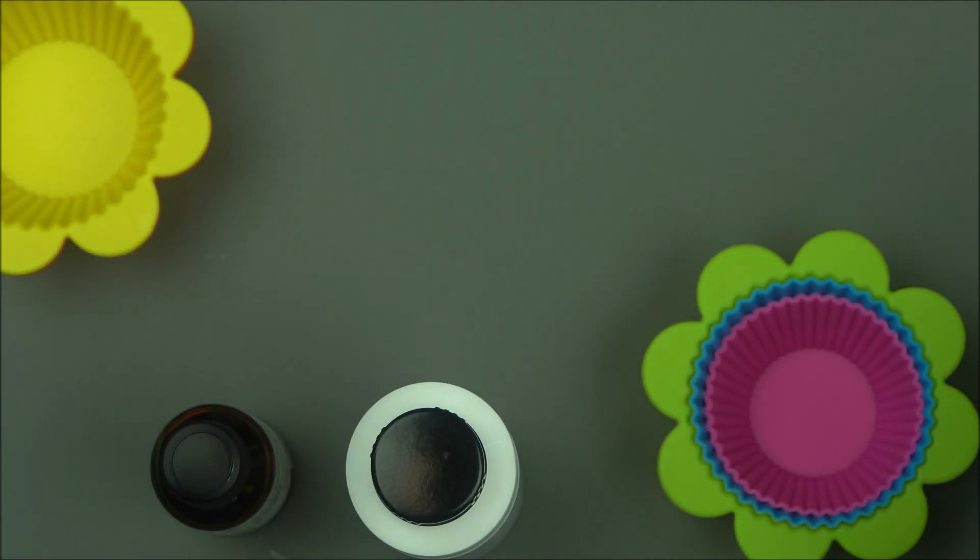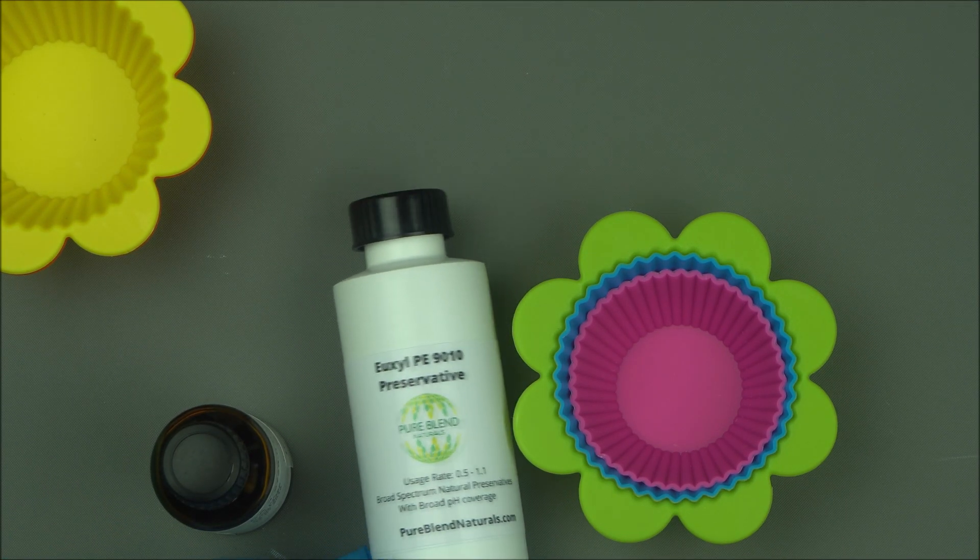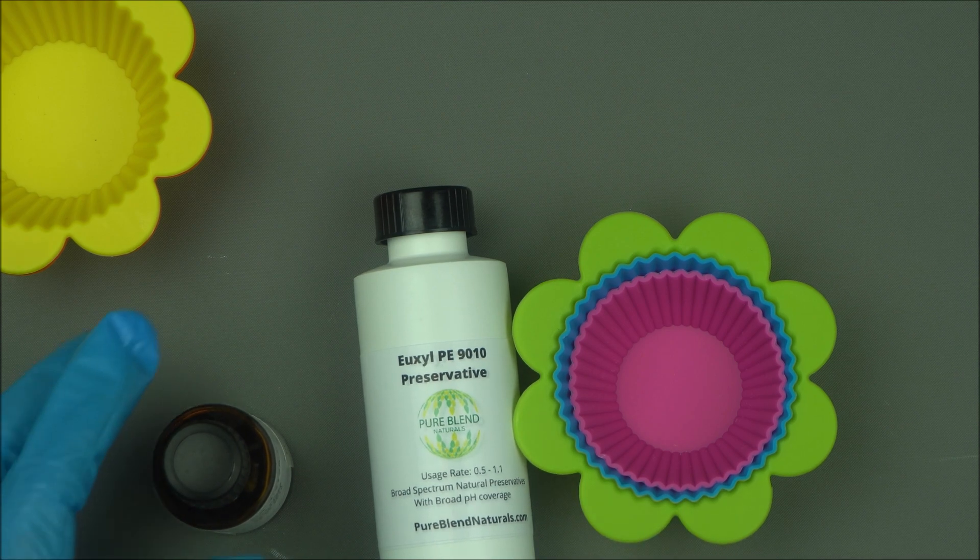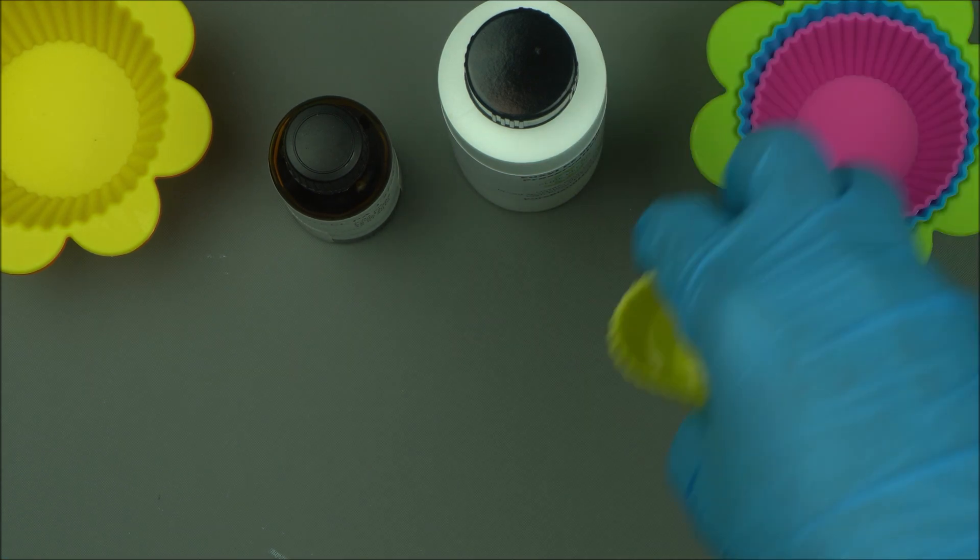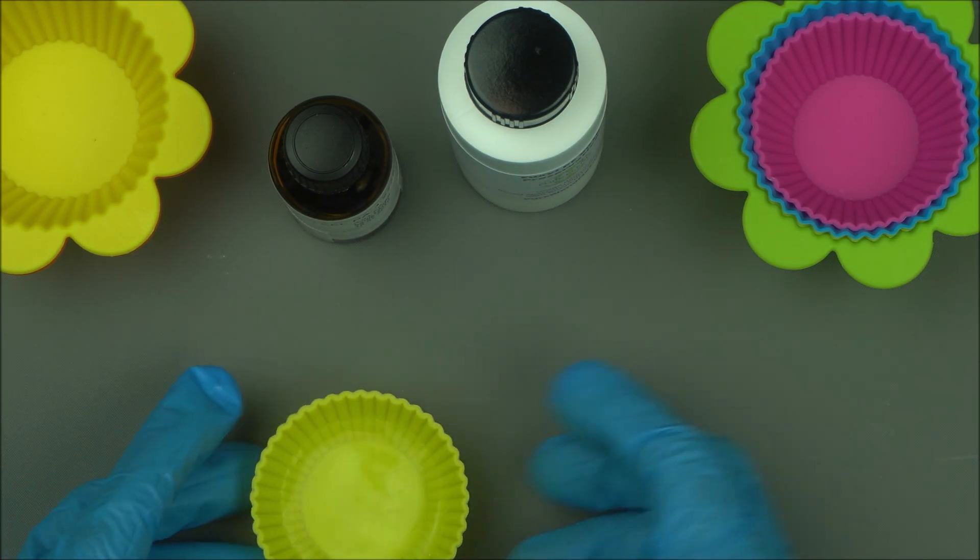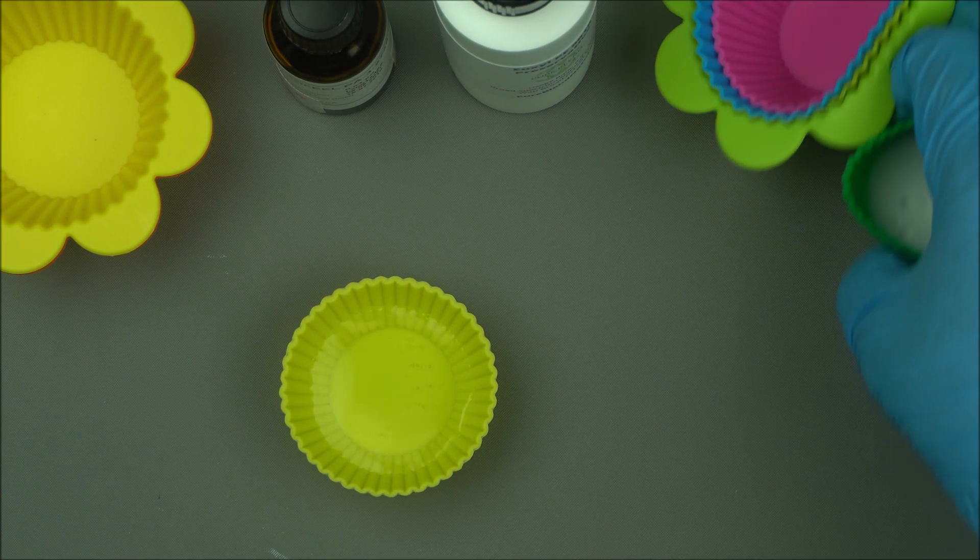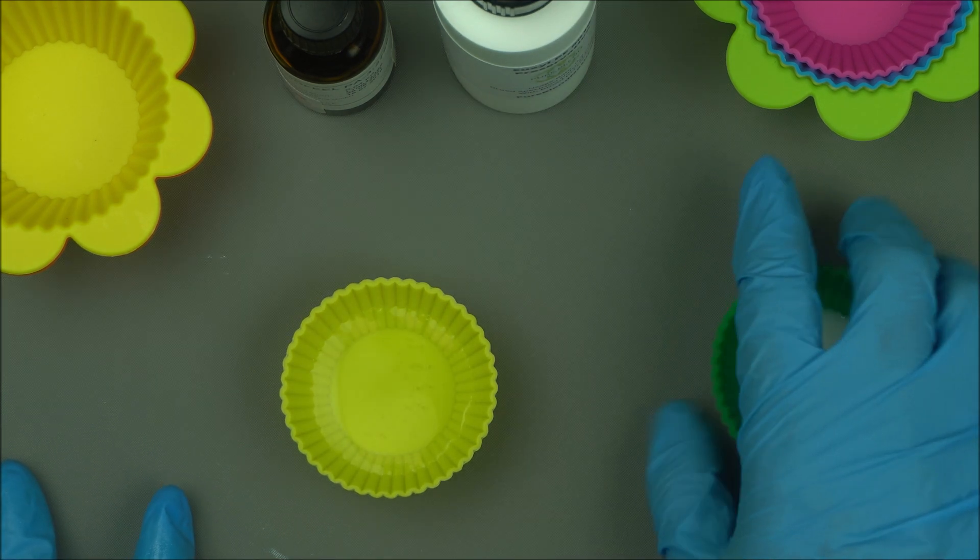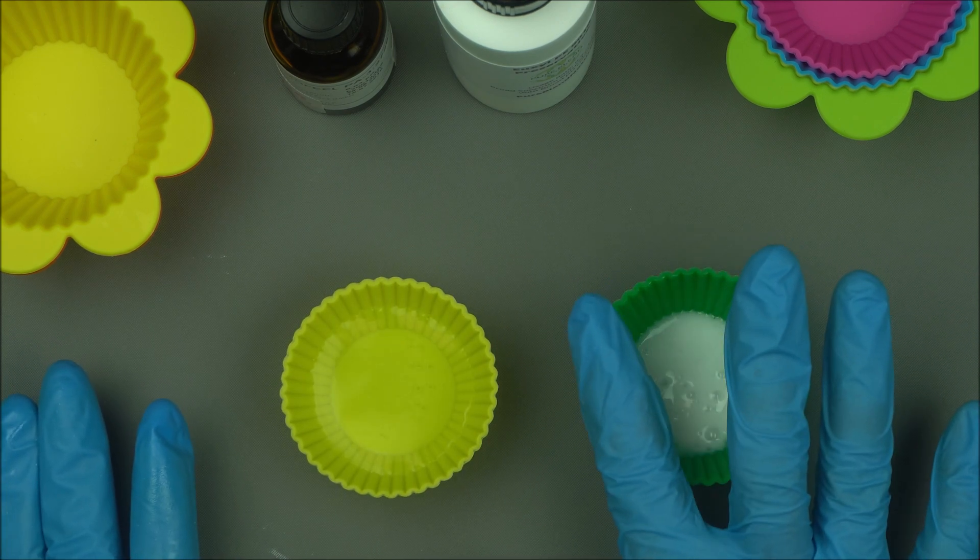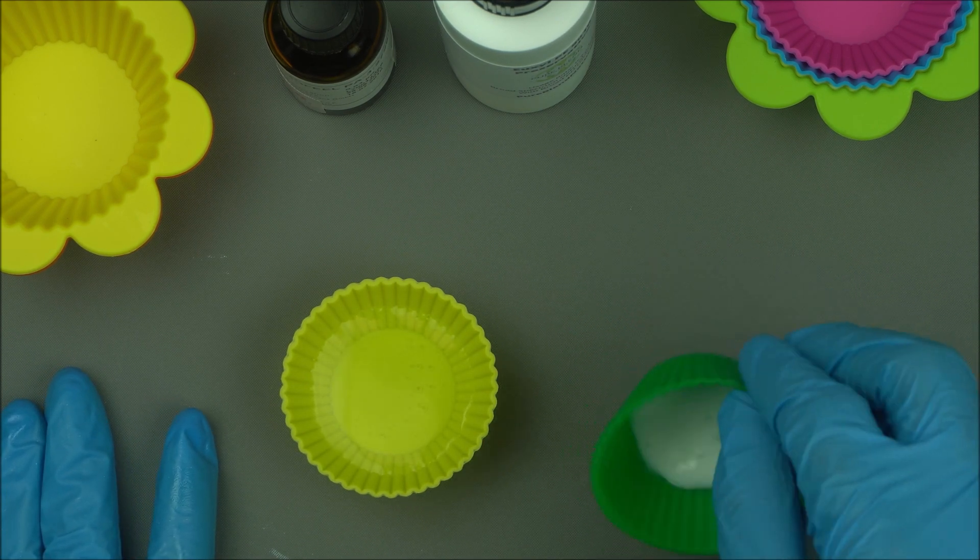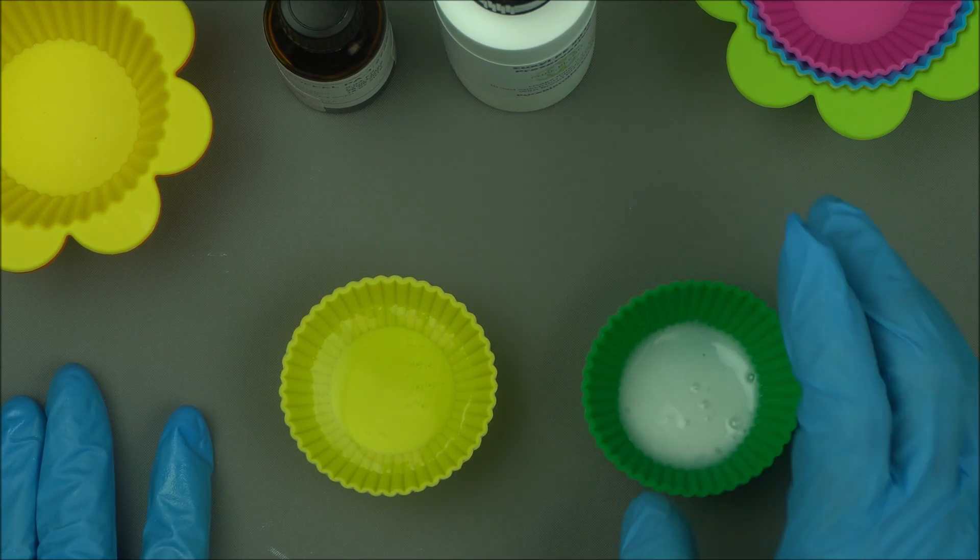Once you have your products ready, you've washed your beakers, you've sanitized them, you're ready to go. Your work surface is clean. Then take your preservative. This is my preservative of choice now, which you can find at Pure Blend Natural: Euxyl PE 9010. When you're making products, especially lotions, remember you have the water phase, you have the oil phase, and you have the cool down phase.